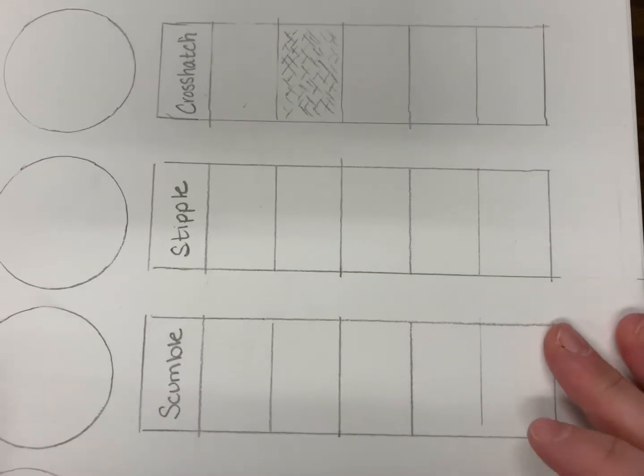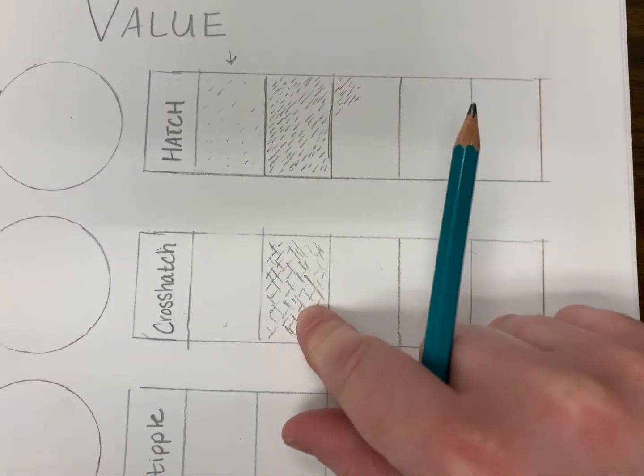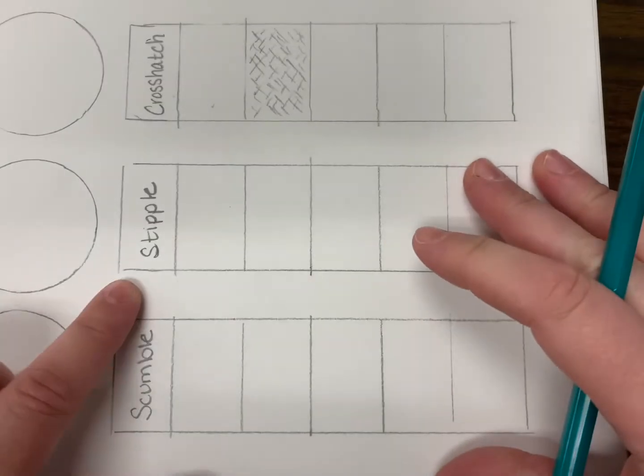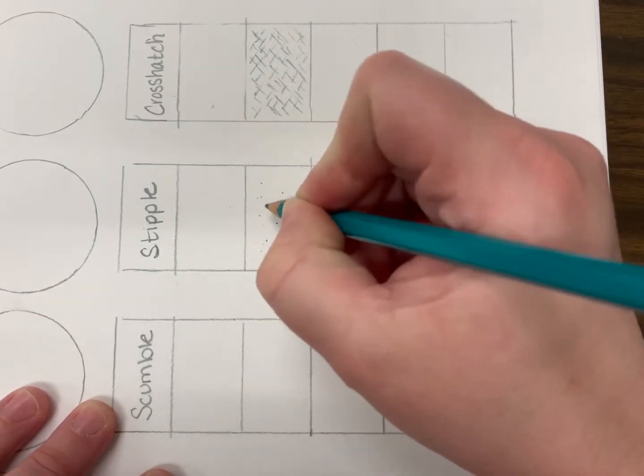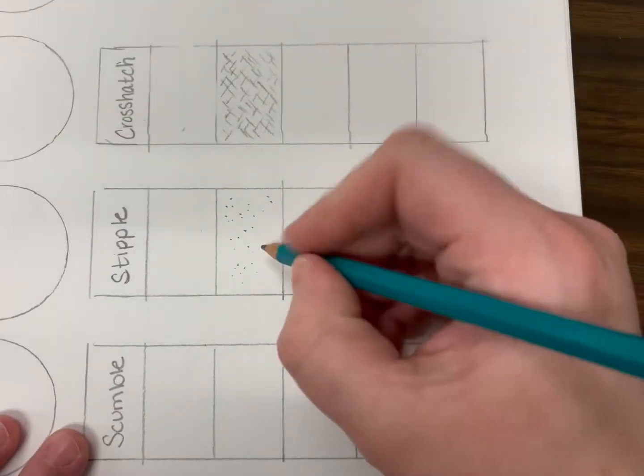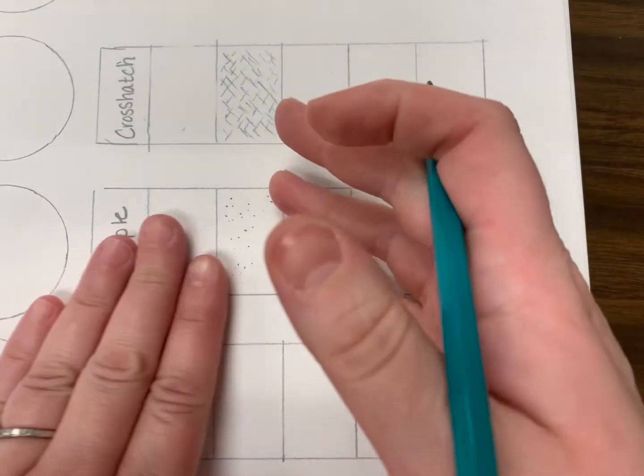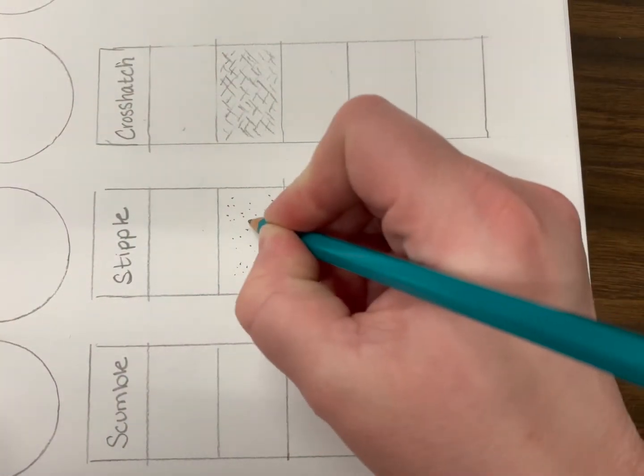If we look at some of the other marks, so we have hatching, crosshatching, stippling—so a series of dots. Starting in the second one just so I can show you enough, your dots can be further apart, you know, to get darker you can put them closer together, maybe they become a little bit bigger.